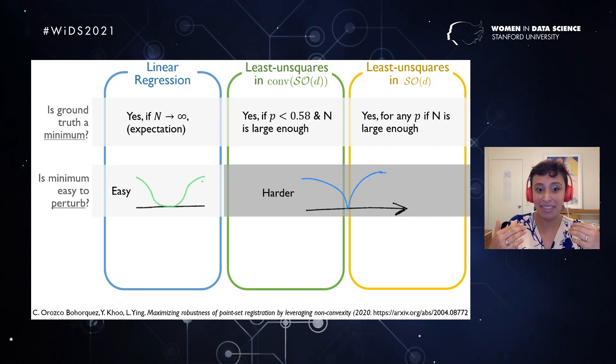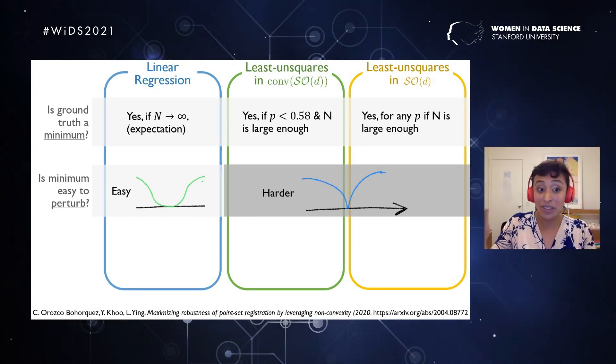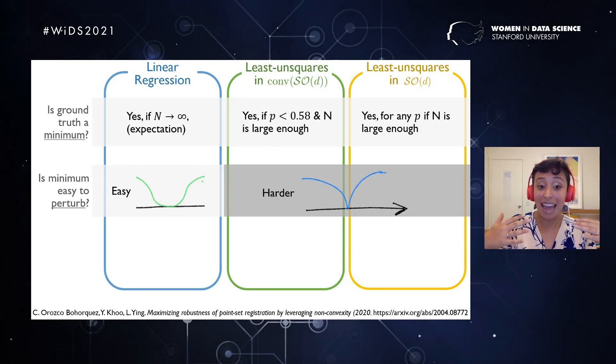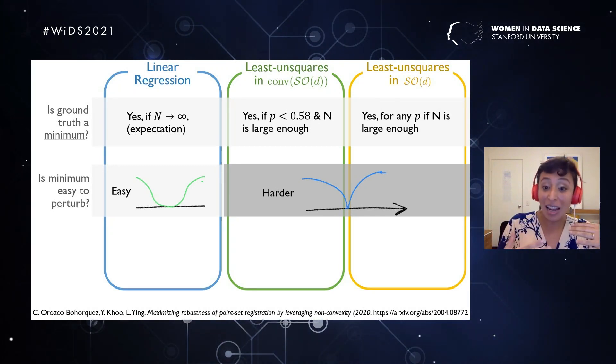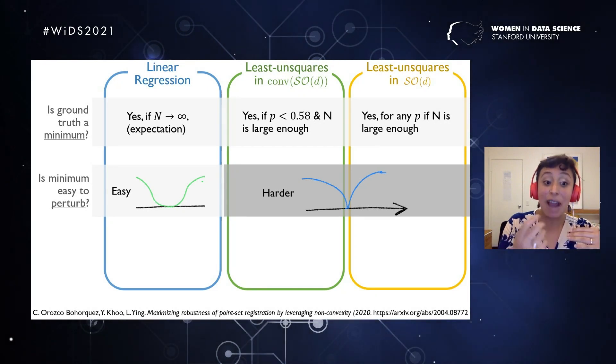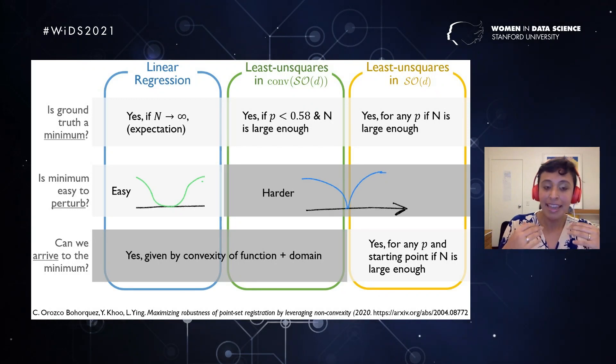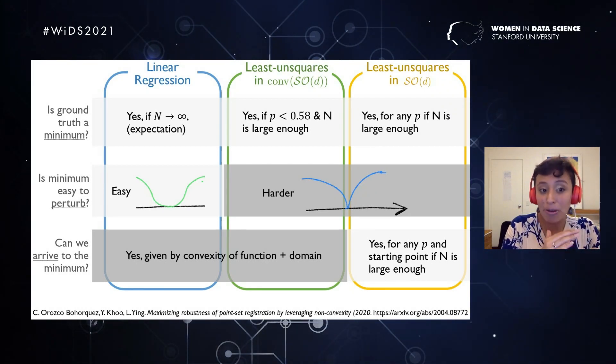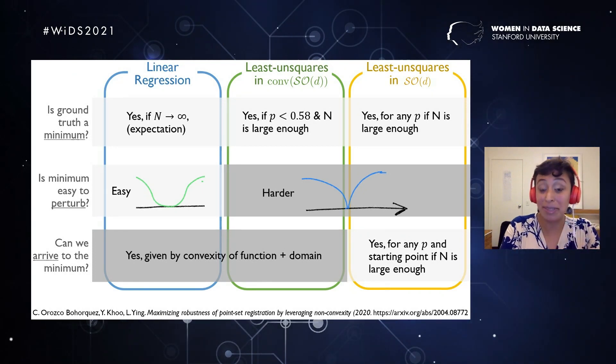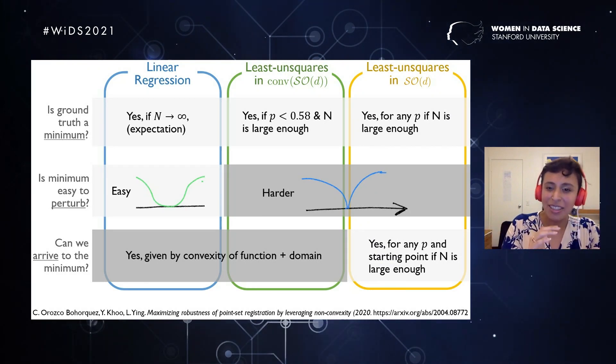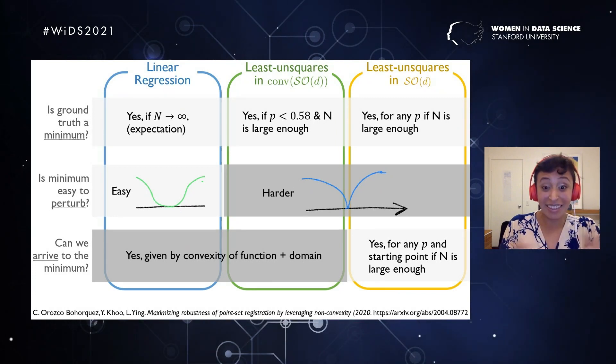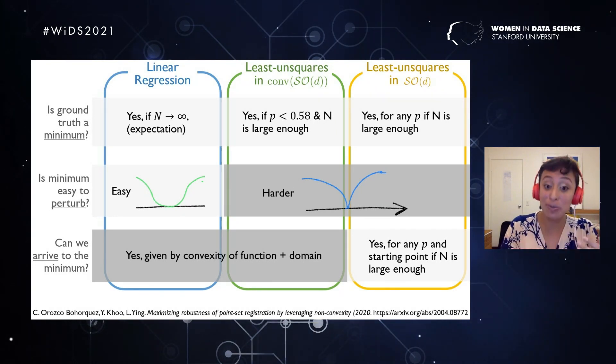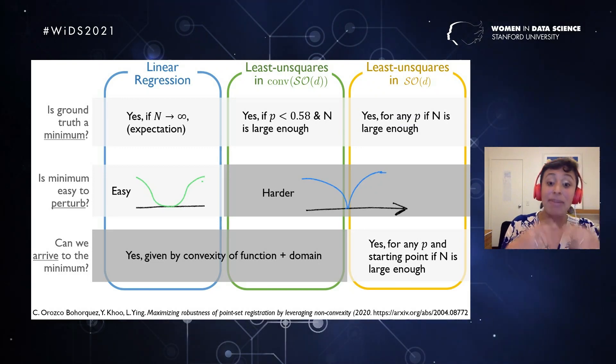And in here, the last question that we need to ask ourselves is, it's not just a matter of is the loss function giving us the ground truth. It is also, can I find an algorithm that can solve this loss function that arrives to the ground truth? So can we reach the minimum? And when we have a convex function, which is this case, we need a convex domain in order to have certainty that we will always reach the minimum. And that happens in the first two problems. But when we are solving the least unsquares in the rotation space, walking in those arches make things very complicated. And there we cannot have certainty. So we also prove that if we can start from any point and if we have a large enough sample size, we will reach the minimum.